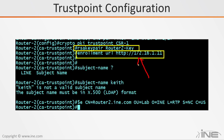Then we have enrollment — this is saying how am I going to find this certificate authority called CSR1, where is it, how do I reach out to it? In this case I'm saying I'm using HTTP, which really means I'm going to use the Simple Certificate Enrollment Protocol, SCEP. The IP address it's located at is 172.16.1.11. At minimum you have to provide the RSA key pair, the enrollment URL, and also a subject name.